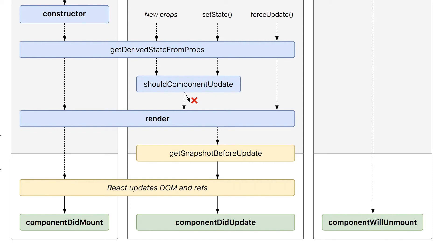getSnapshotBeforeUpdate is called right after the render method is called. It is a little tricky — getSnapshotBeforeUpdate will return some value which will be used by componentDidUpdate. It refers to the value just before the DOM is updated, so even though render has happened, the actual DOM changes have not been applied yet. There is a delay, and during that time getSnapshotBeforeUpdate is getting the current state of the DOM before changes are applied.